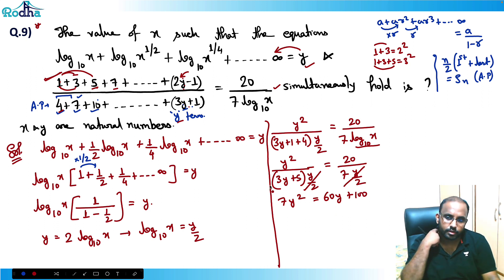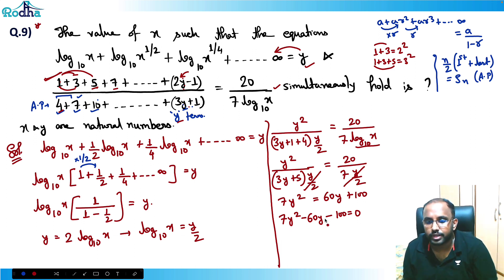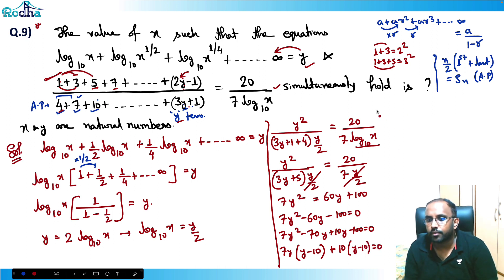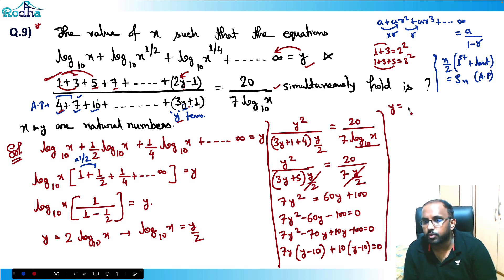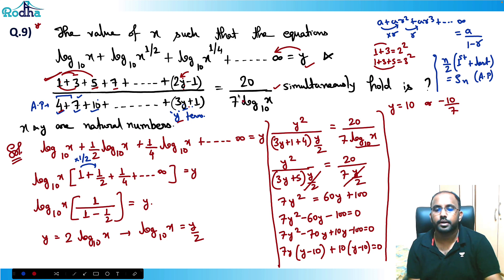Rearranging: 7y² - 60y - 100 = 0. Factoring: 7y² - 70y + 10y - 100 = 0, giving 7y(y - 10) + 10(y - 10) = 0, so (7y + 10)(y - 10) = 0. Therefore y = 10 or y = -10/7.